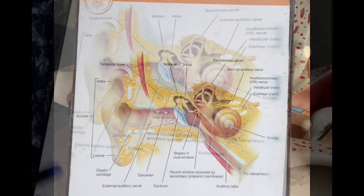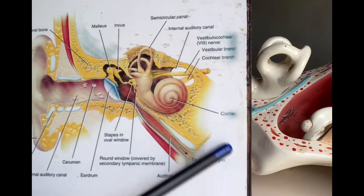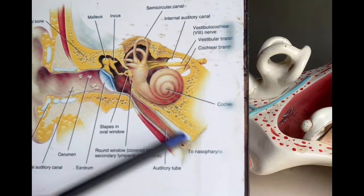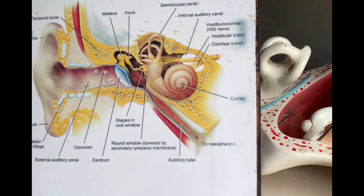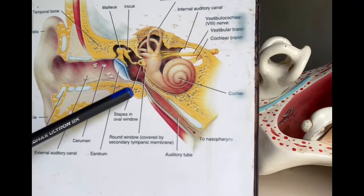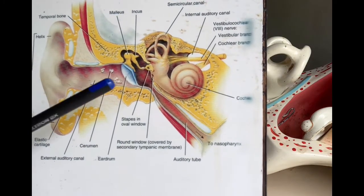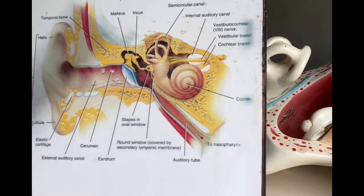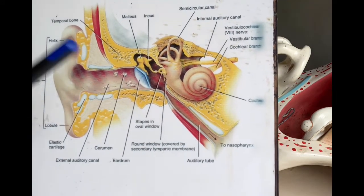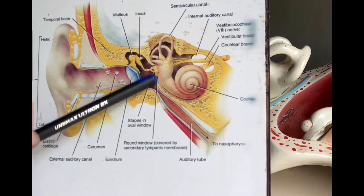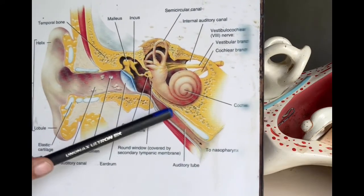The middle ear cavity is connected with the nasopharynx through the auditory tube. This auditory tube is also called the Eustachian tube. The anterior wall of the middle ear cavity presents the opening of this auditory tube, which helps to maintain the pressure of air on the eardrum from the inner side.